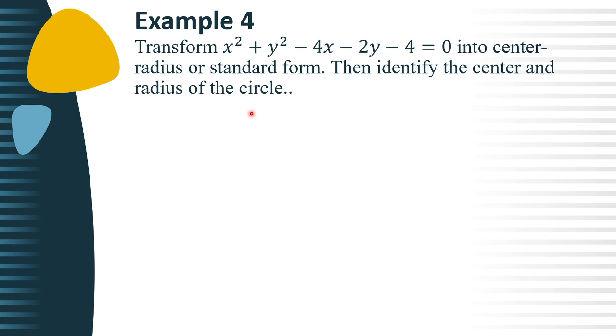Okay, so first, the given equation is x square plus y square minus 4x minus 2y minus 4 equals 0. First, group the terms with the same variables. So we have x square minus 4x and y square minus 2y.